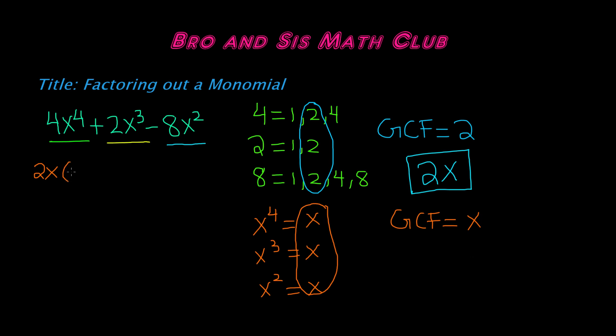x to the 4th divided by x gives us x cubed. Because remember, when you're dividing variables, you're going to subtract the exponents. So 4 minus 1 gives you 3. So we have 2x cubed.